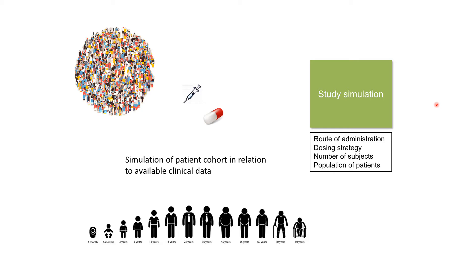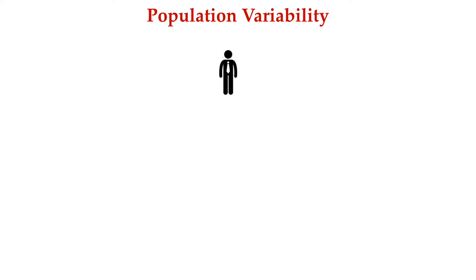In terms of study simulation, as I was saying, route of administration and specific characteristics of the population of interest — such as age, gender, or potential comorbidities — are important. Population variability can be simulated considering age, gender, and specific conditions present in subpopulations of patients. We do that by considering a network of equations that put together anthropometric, anatomical, and physiological factors.